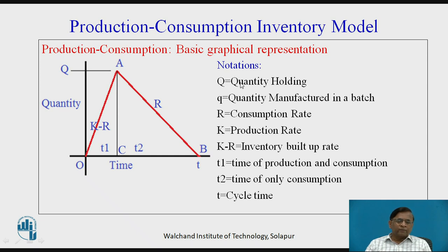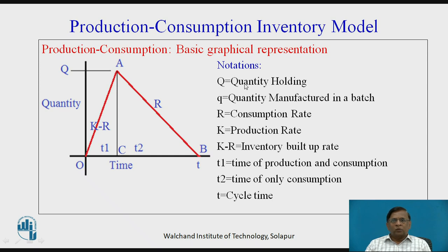Firstly, we will talk about the notations. Graphically, this model is represented wherein the vertical axis indicates quantity and the horizontal axis indicates time — so this is the graph between quantity versus time. Capital Q is the holding quantity, that is the quantity we are physically holding. On the graph, that is depicted with point A, and projecting point A on the vertical axis gives us capital Q.